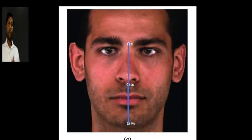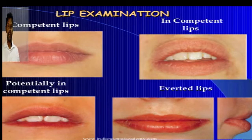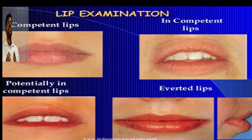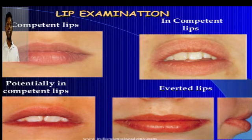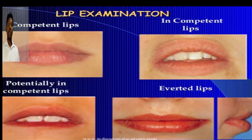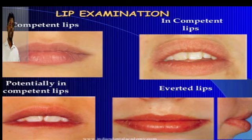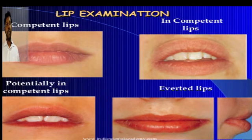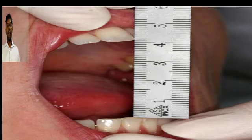Coming to lips — the normal form is competent, where a lip seal is formed. If the lips are small and the patient cannot form a lip seal, they are incompetent. If the patient has normal lips but cannot form a lip seal due to proclined maxillary anteriors, but can do so with increased muscle activity, these are potentially competent lips. Another form is everted or hypertrophic lips.